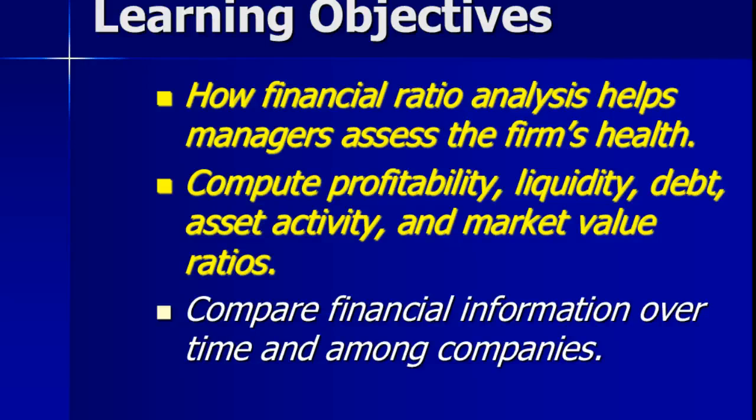In the car industry, it happens all the time — all this information is public. You can look at any car on the internet and find out all the specifics of their features, miles per gallon, warranty. All these companies are public, so you can look at their financial statements and know exactly how their capacity is, their financial ratios, their sales.